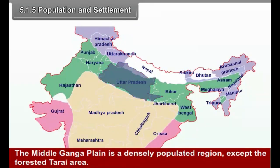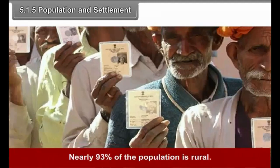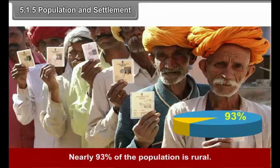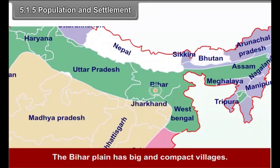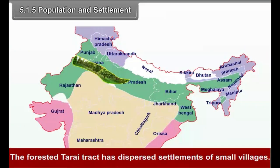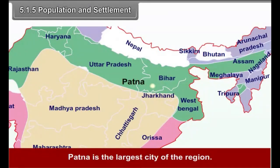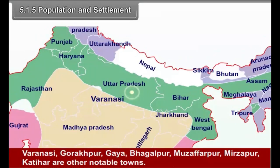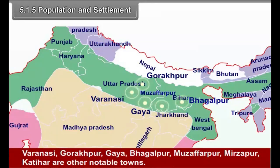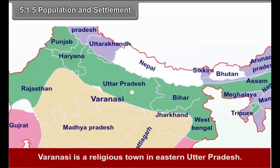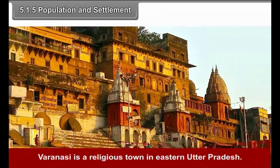The middle Ganga Plain is a densely populated region. Except the forested Tarai area, nearly 93% of the population is rural. The Bihar Plain has big and compact villages. The forested Tarai tract has dispersed settlements of small villages. Patna is the largest city of the region. Varanasi, Gorakhpur, Gaya, Bhagalpur, Muzaffarpur, Katihar are other notable towns. Varanasi is a religious town in eastern Uttar Pradesh.